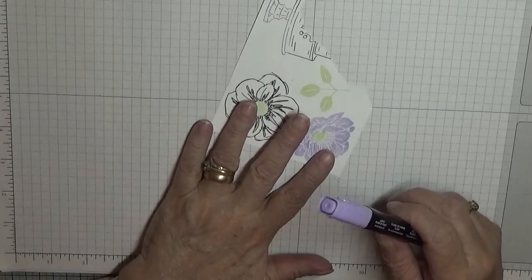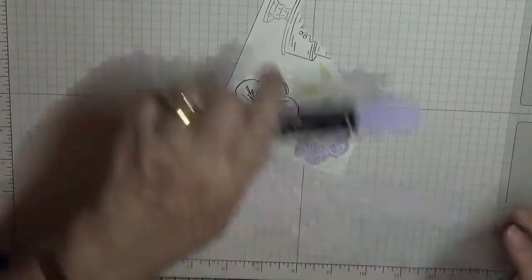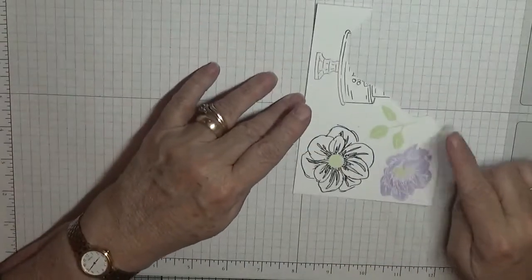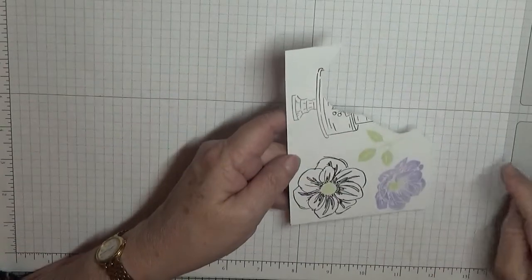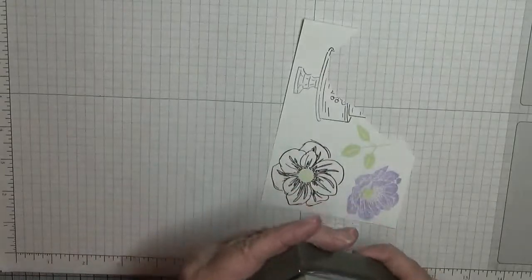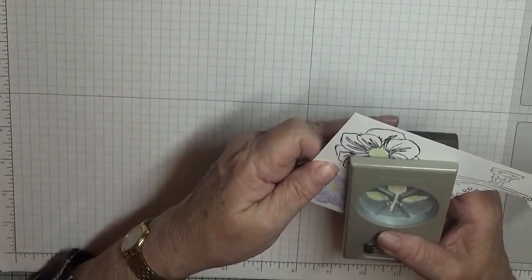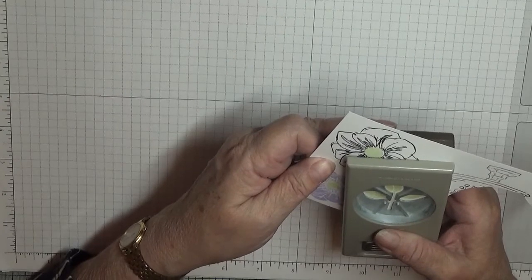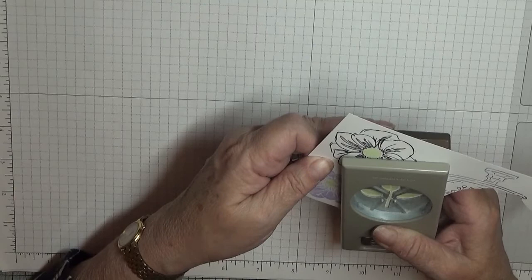Then we cut these out. I haven't got dies for them, cut them out by hand. And punch out the leaves. So we'll do them first because that's the easy bit.